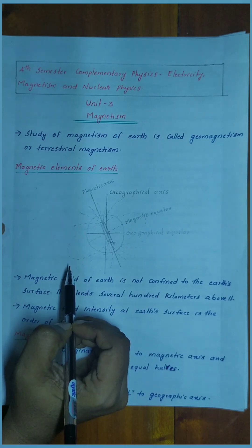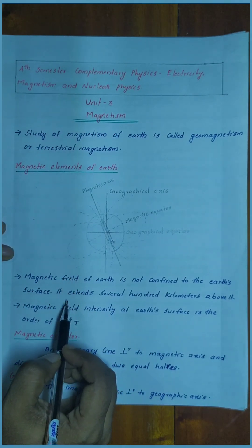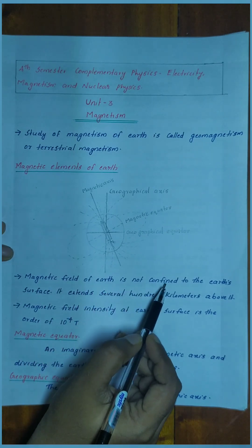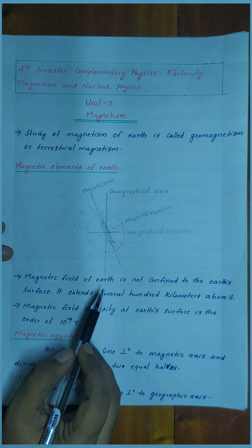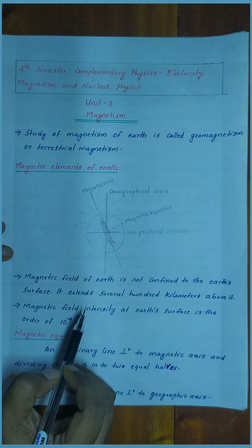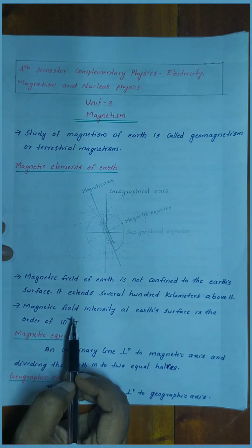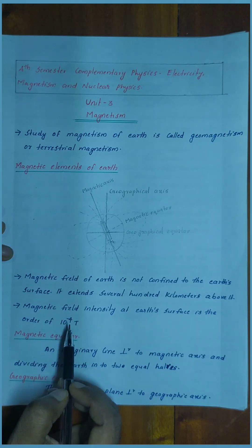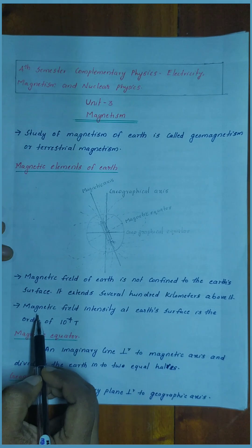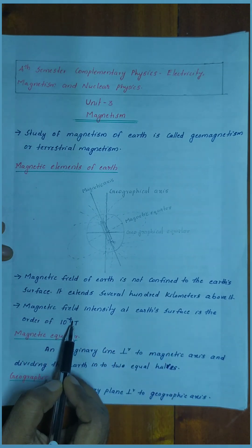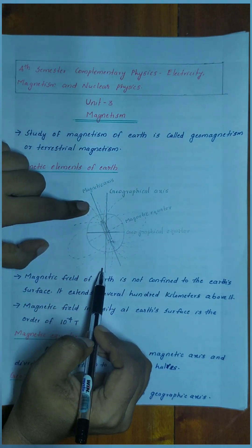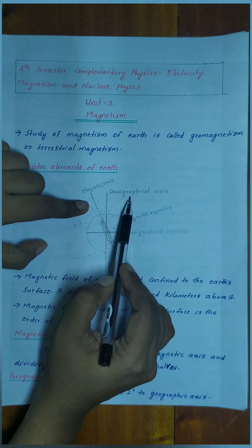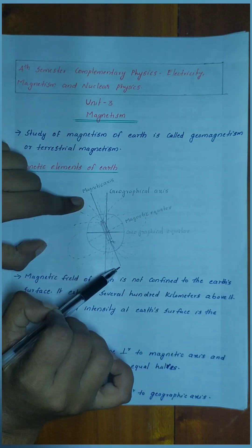The magnetic elements of the earth are our next topic. The magnetic field of the earth is not confined to the earth's surface — it extends several hundred kilometers above it. Now, let's consider a picture of the earth. This line represents the geographical axis.